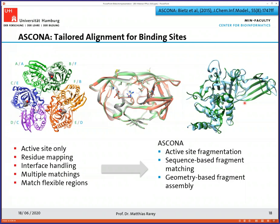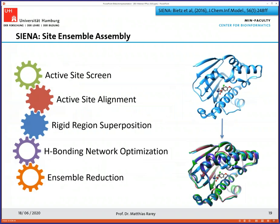Ascona is a method to handle all these cases in a fully automated fashion. It's active site-based, has a clear residue mapping as a result, is able to handle interfaces between proteins, creates multiple matchings if you have them, and also matches flexible regions in the binding sites correctly. Ascona is a very important part of a pipeline we call Sienna. Sienna uses a special database technique to screen for active sites, this alignment technique, a superposition algorithm, hydrogen bond network optimization from Protoss, and an ensemble reduction — the whole workflow gives you, from a single starting structure, a ready-to-use alignment of multiple protein structures for structure-based virtual screening in an ensemble fashion, including protein flexibility.